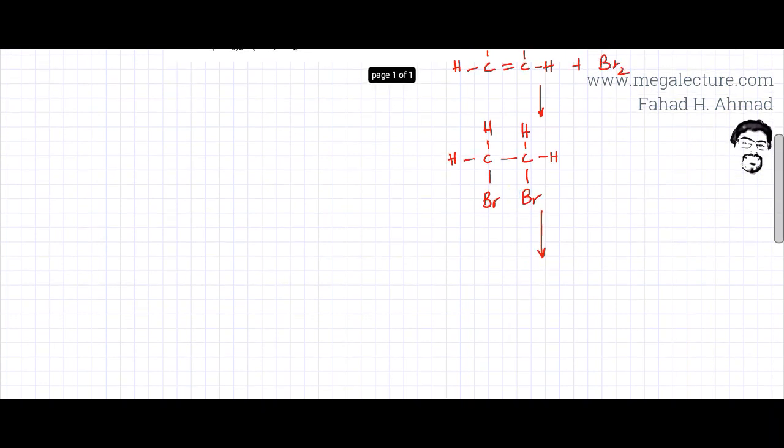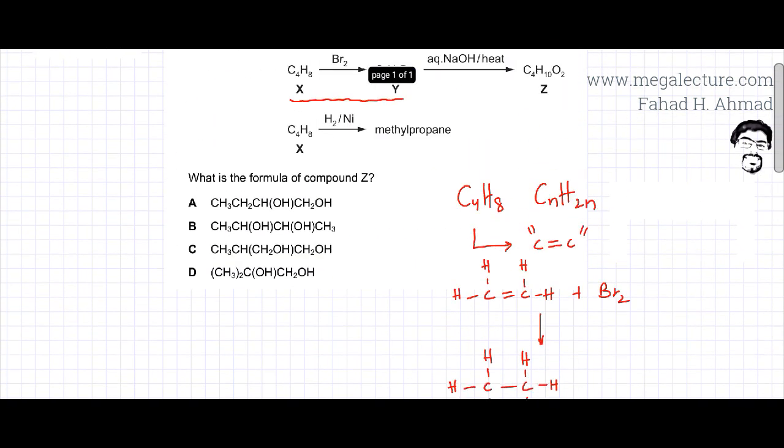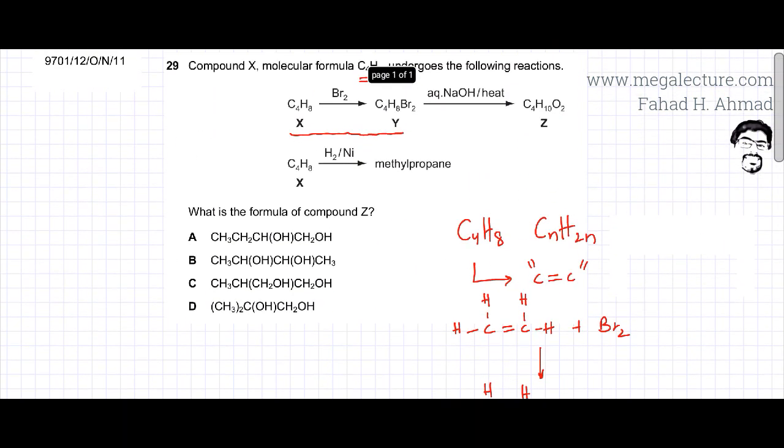Both bromines would be substituted by OH groups. So instead of bromine, you'll have OH over here and OH over here. So this over here represents the first part. This is what's happening in the first part in this conversion X to Y and then Y to Z.